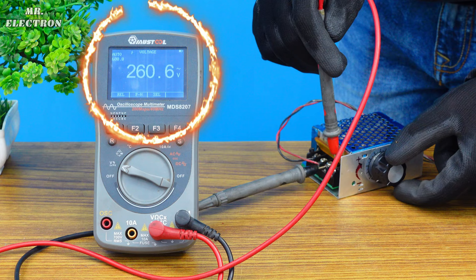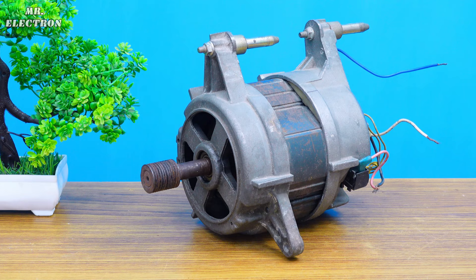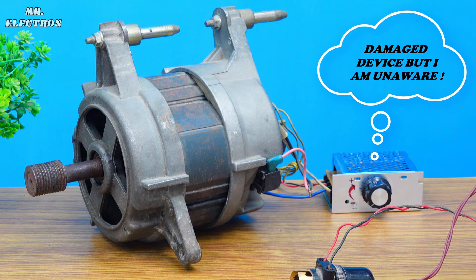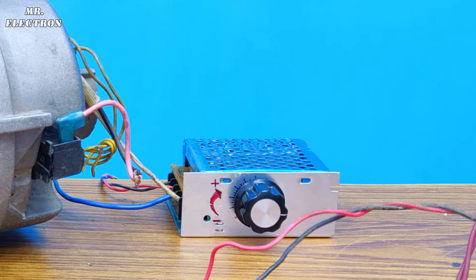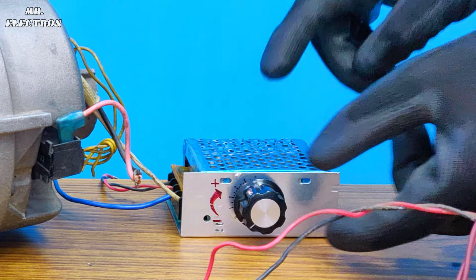It is dangerous because of what I am going to show you now. Let's say that I have this universal motor connected to its output and I do not know that the device is damaged. And so, as usual, I will set the knob to the minimum and connect the 220V supply to the input.